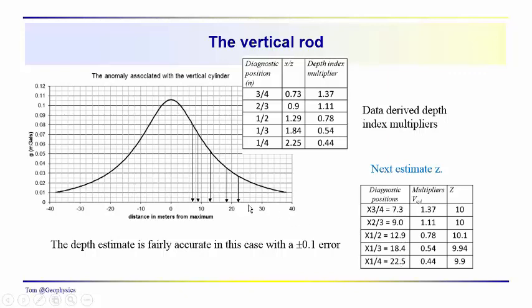The anomaly drops off to one quarter of its maximum value at a distance of approximately 22.5 meters from the maximum, the location of the maximum. We use the multipliers, and then we estimate z. We can see that z in this case is about 10 meters with plus or minus 0.1 error in the estimate.